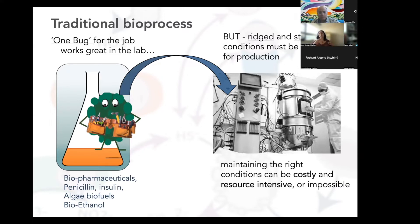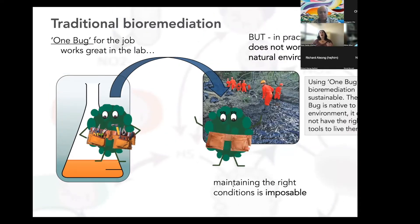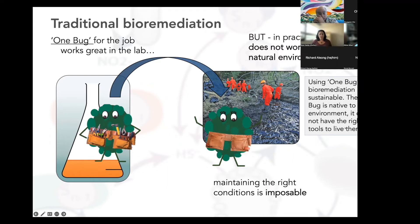When we take this one-bug approach and apply it to bioremediation, a lot of people find an organism that can degrade hydrocarbons and grow it in the lab thinking they have the answer to oil spills. But that one bug does not work in complex natural environments — it doesn't have the tools. Using a single bug for bioremediation is not sustainable, because it's not native to that environment and cannot maintain the right conditions.